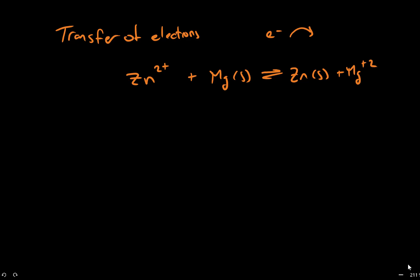If we think about the charges on these atoms on the reactant side and the product side, zinc starts off as a plus two and it becomes an element with a charge of zero, whereas magnesium starts off with a charge of zero and ends up with a charge of plus two. Since the only way to change a charge state is by exchanging electrons, this must be a reaction where electrons are transferred from one atom to another — therefore it must be an electrochemical reaction.